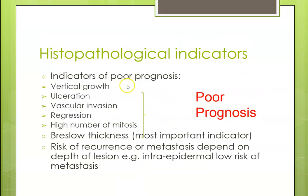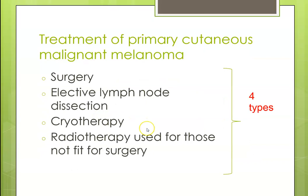The prognostic histopathological indicators are vertical growth, presence of ulceration, vascular invasion, regression, and high number of mitoses. There are four types of treatments for malignant melanoma: surgical excision, elective node dissection, cryotherapy, and radiotherapy.